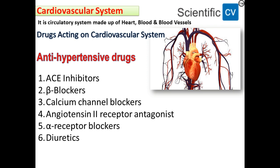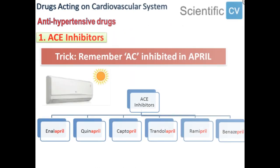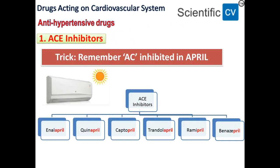The first class is ACE inhibitors. The trick is to remember 'ACE inhibited in April' — the suffix is '-pril'. The drugs will be enalapril, quinapril, captopril, trandolapril, ramipril, and benazepril. For this class of drugs, remember the suffix '-pril'.